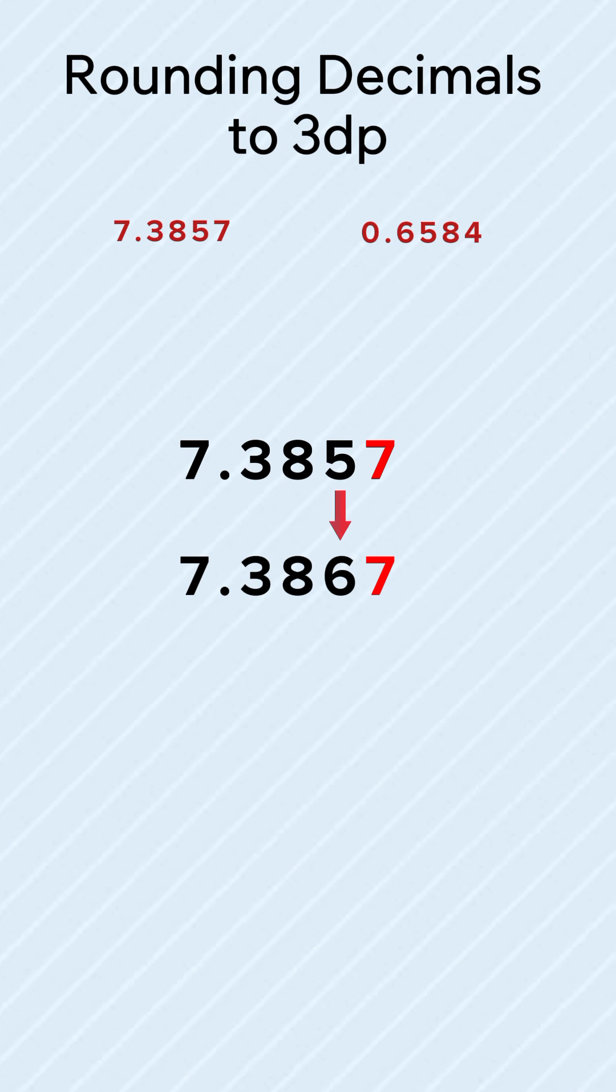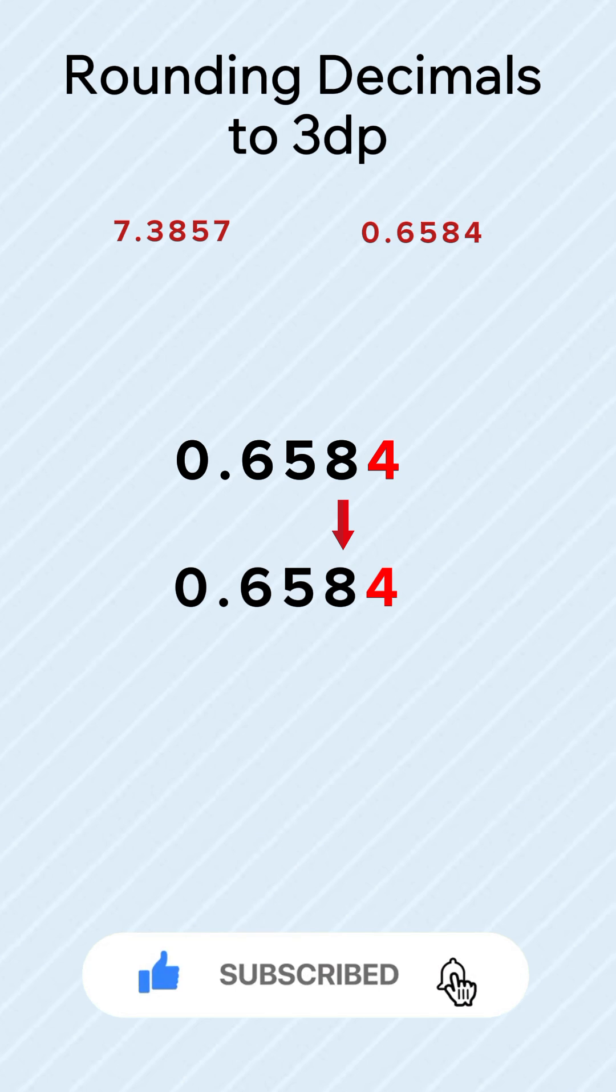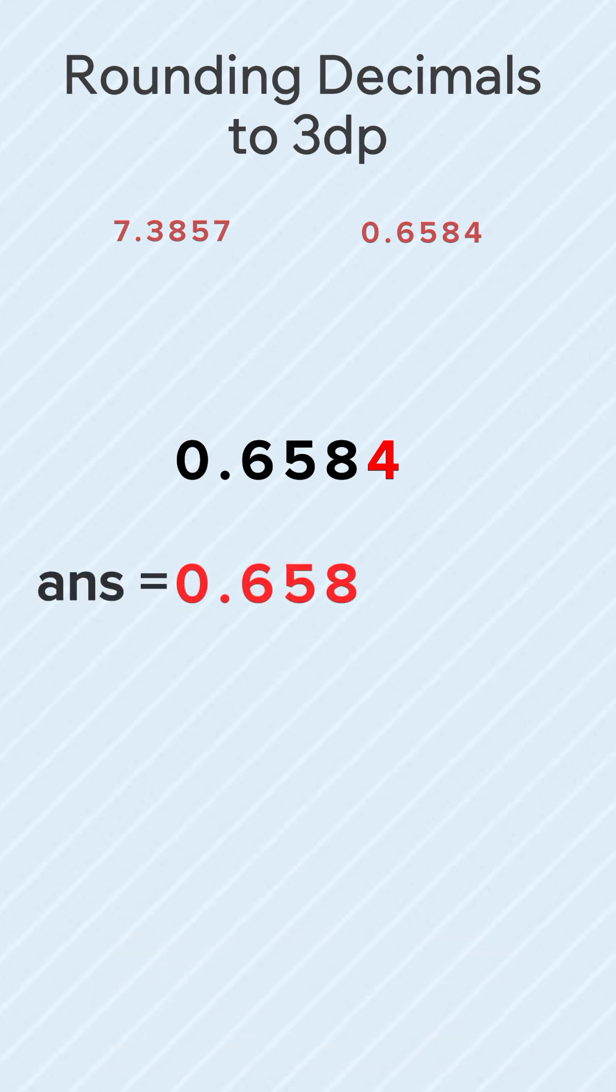Remove other digits to the right of the third decimal place. The answer is 7.386. Number 2: 0.6584.